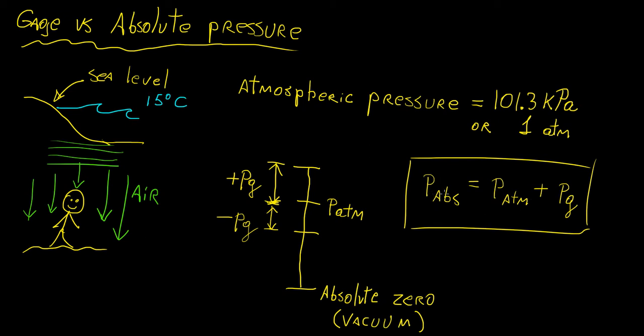The absolute pressure is just going to be the addition of the two. And remember that this can also be negative. So we can also have something that is below the benchmark of the atmospheric pressure.